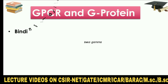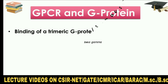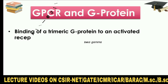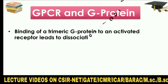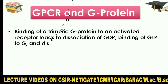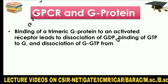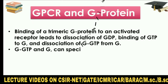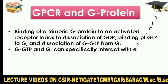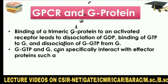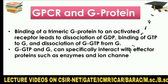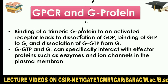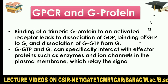Binding of a trimeric G-protein to an activated receptor leads to dissociation of GDP, binding of GTP to G-alpha, and dissociation of G-alpha-GTP from G-beta-gamma. Both G-alpha-GTP and G-beta-gamma can specifically interact with effector proteins such as enzymes and ion channels in the plasma membrane, which relay the signal onward.